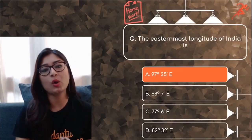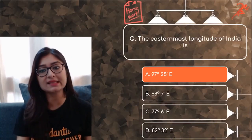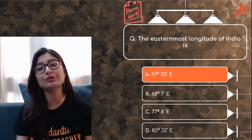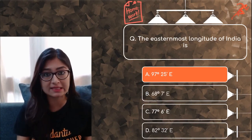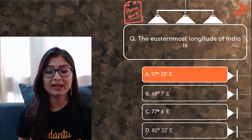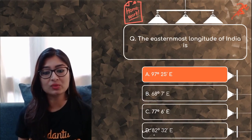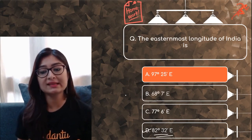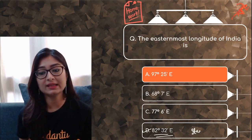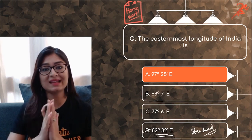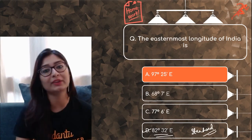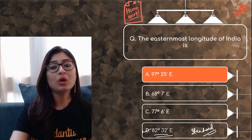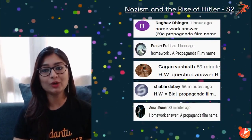The easternmost longitude of India is 97 degrees 25 minutes East. Some of you may be confused, but this is the standard meridian — our standard meridian according to which our Indian Standard Time is followed.